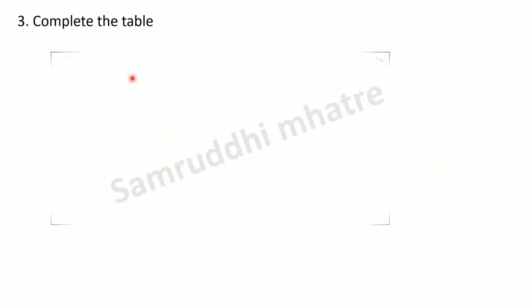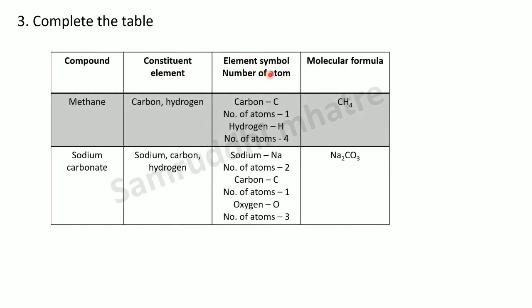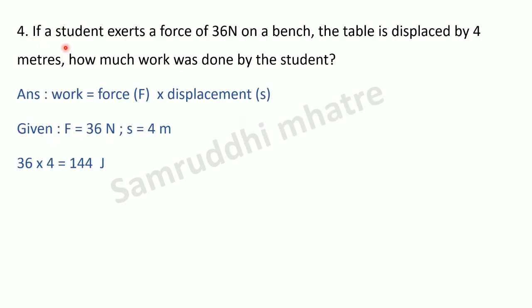Complete the table: compound, constituent elements, element symbols, number of atoms, and molecular formula. First compound is methane — constituent elements are carbon and hydrogen. Carbon's symbol is C, hydrogen's symbol is H, and methane's molecular formula is CH4. Next is sodium carbonate — constituent elements are sodium, carbon, and oxygen. Sodium's symbol is Na, carbon's symbol is C, oxygen's symbol is O with 3 atoms, and the molecular formula is Na2CO3.